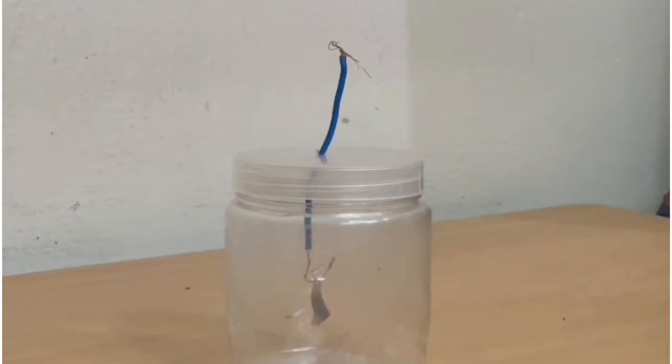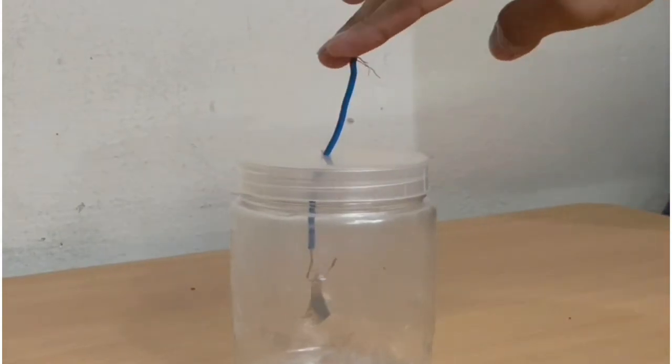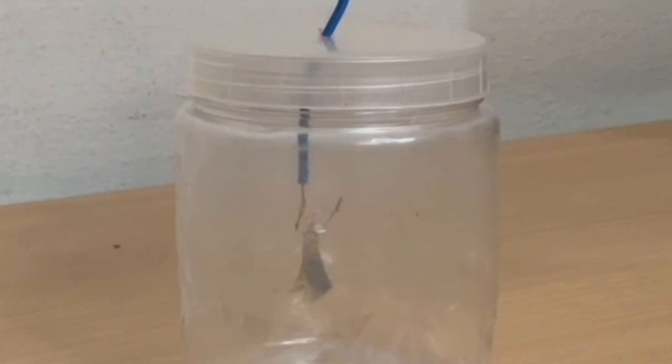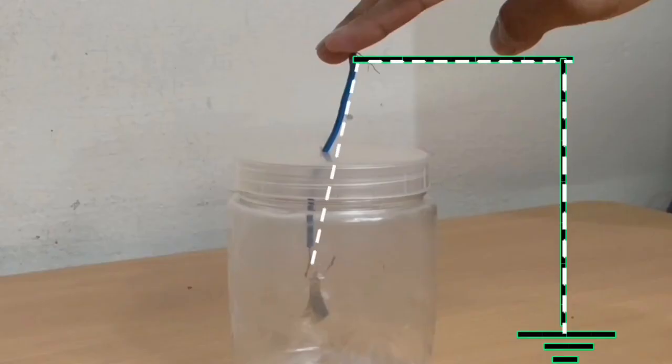Now touch the copper wire with your hands. Observe that the leaves collapse. This indicates that the electroscope is discharged.